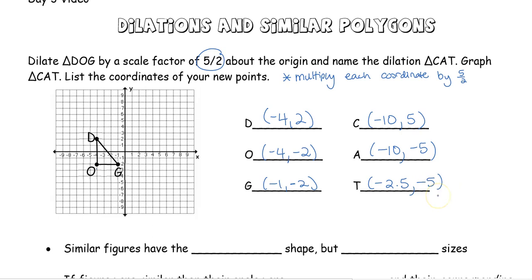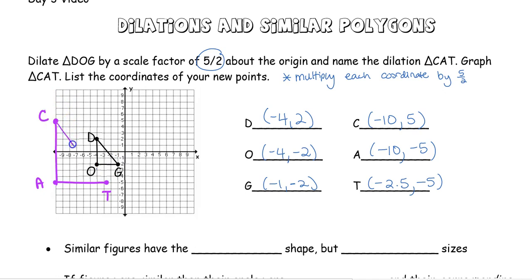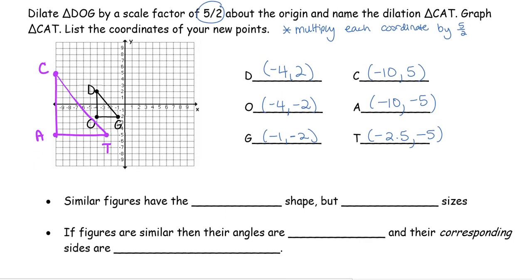So our new dilated triangle: C is at (−10, 5), A is at (−10, −5), and T is at (−2.5, −5) — so halfway between 2 and 3 — negative 5.